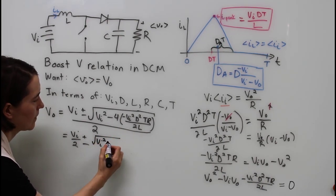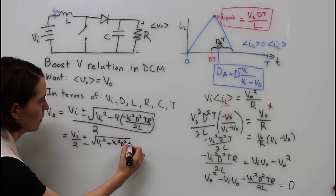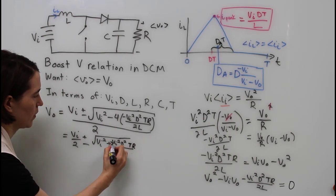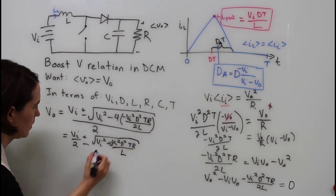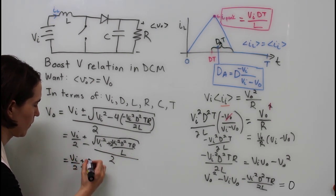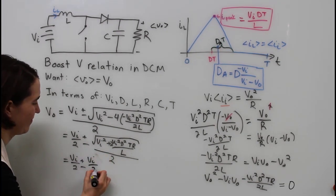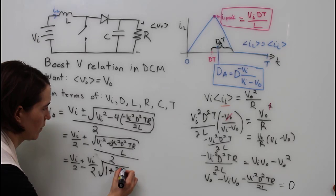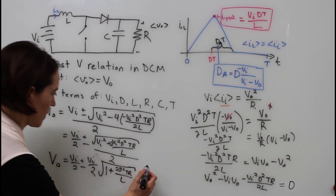The two negatives here become a positive. We can simplify some of the terms: 4 divided by 2 becomes just a 2. Then we can actually bring this V in squared out of both terms and bring it to the front outside of the square root. And it's just V in by itself. Let me squeeze our terms in here. And that's the full equation for the output voltage.